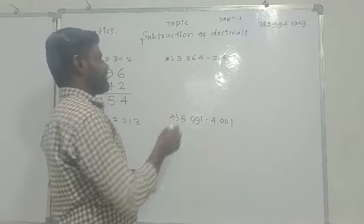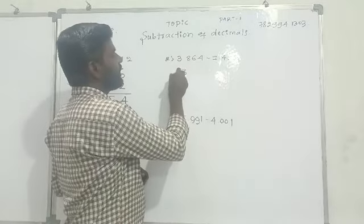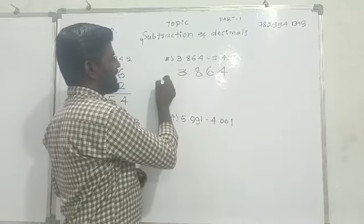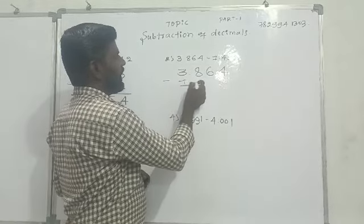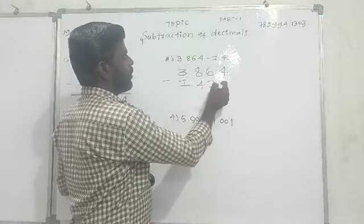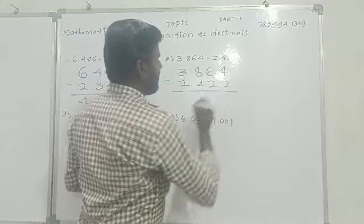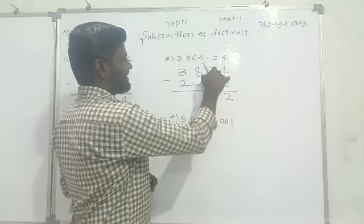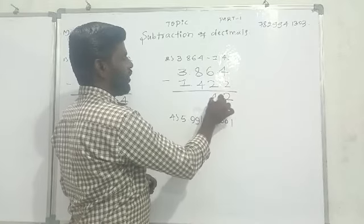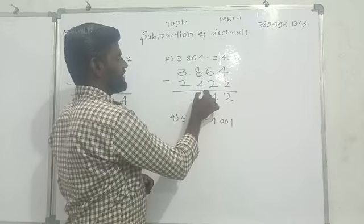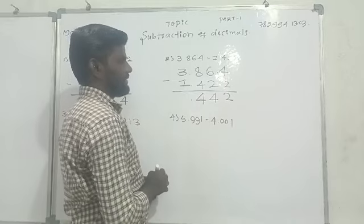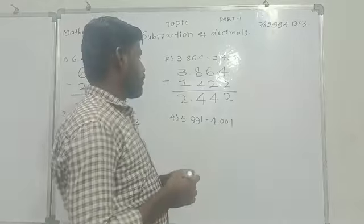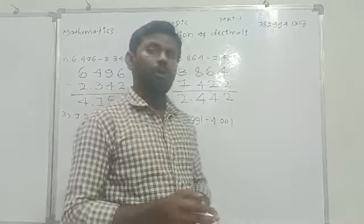Let's come to the second question. 3.864 minus 1.422. Yes. 4 minus 2 is 2. 6 minus 2 is 4. 8 minus 4 is 4. Decimal point as it is. 3 minus 1 is 2. Answer is 2.442.